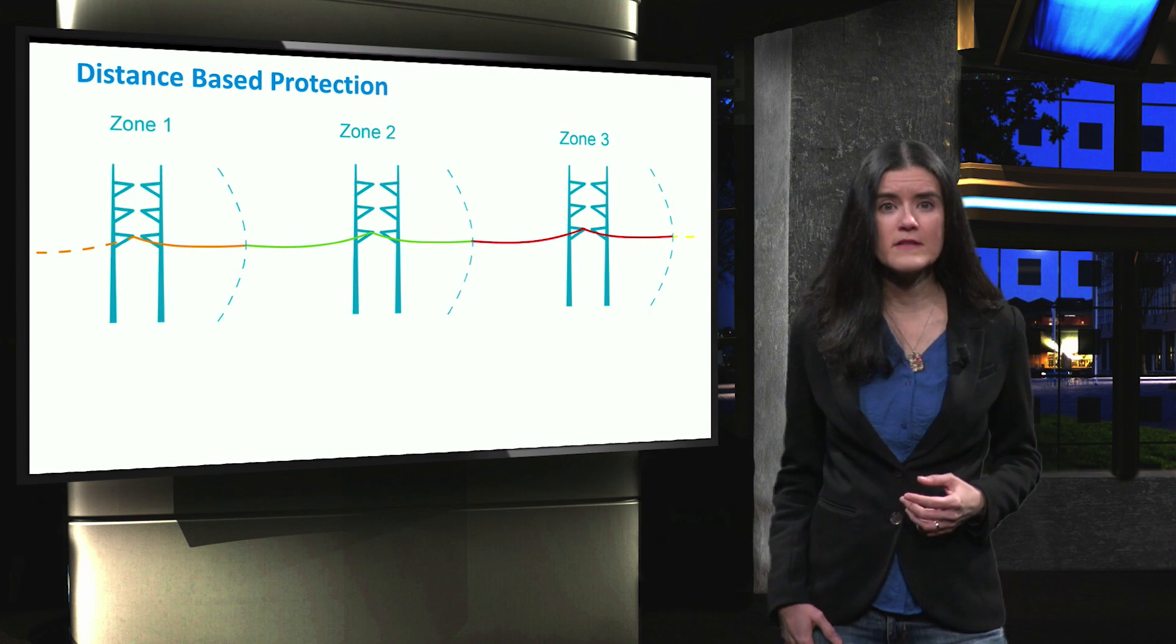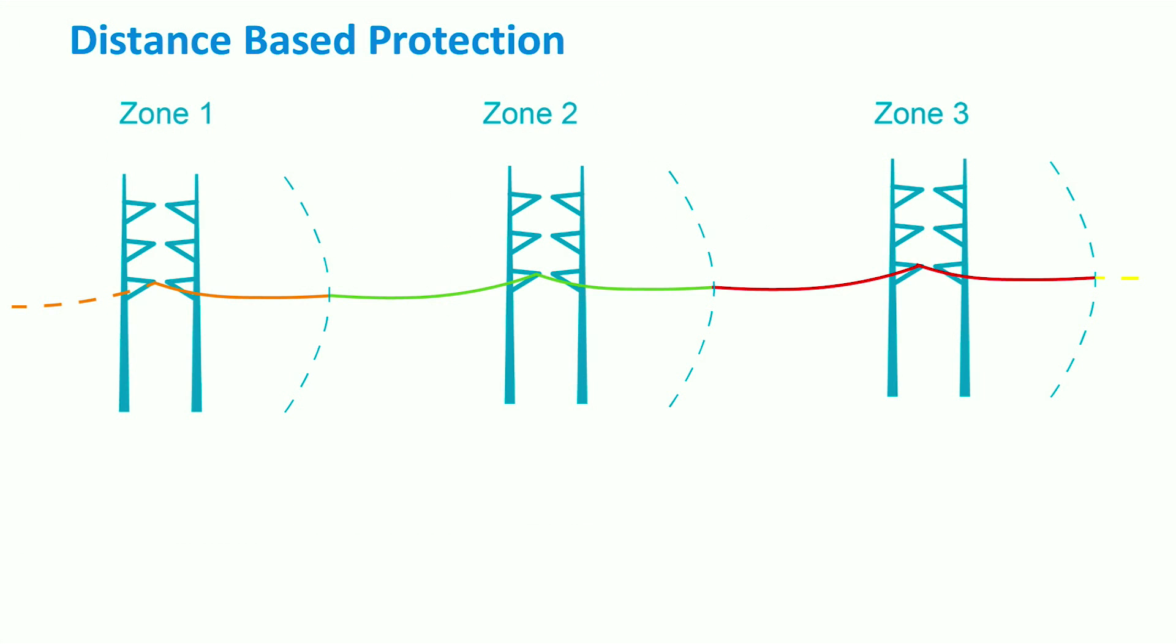Let's now look at the distance-based protection method. Distance protection relies on the use of distance relays, where the current at the fault location and the relay voltage are compared. Based on the measured values of current and voltage, the relay calculates the impedance at its location.